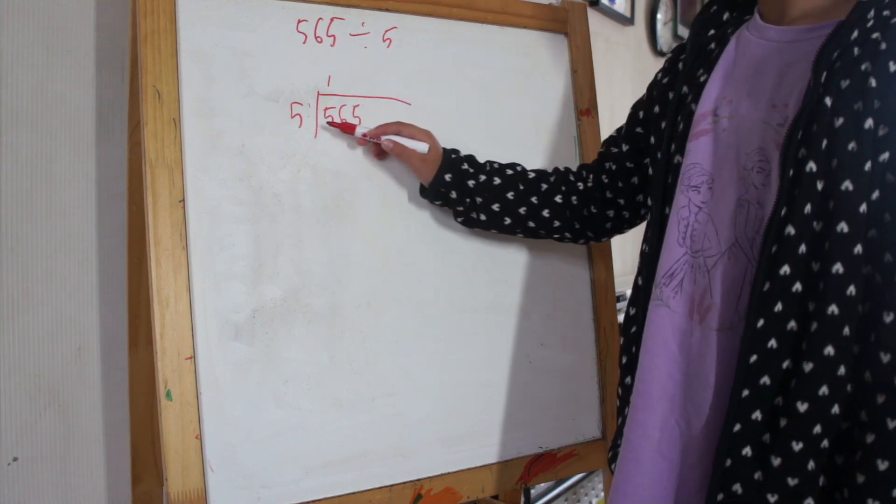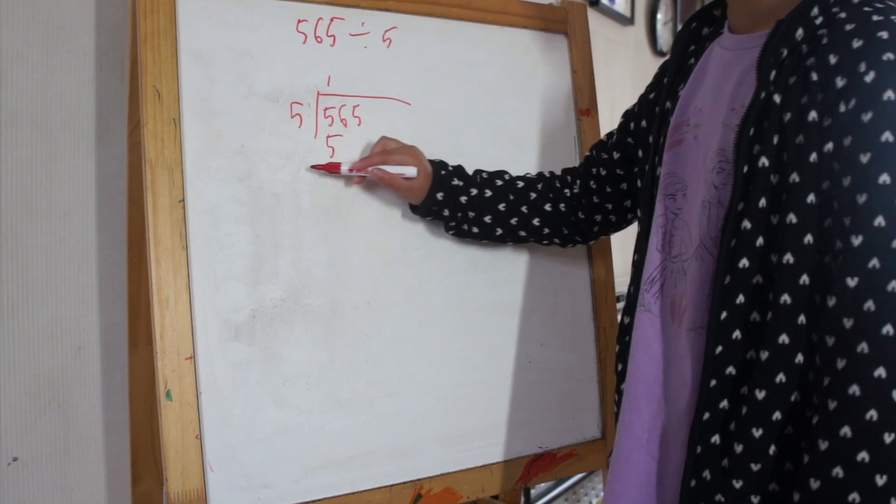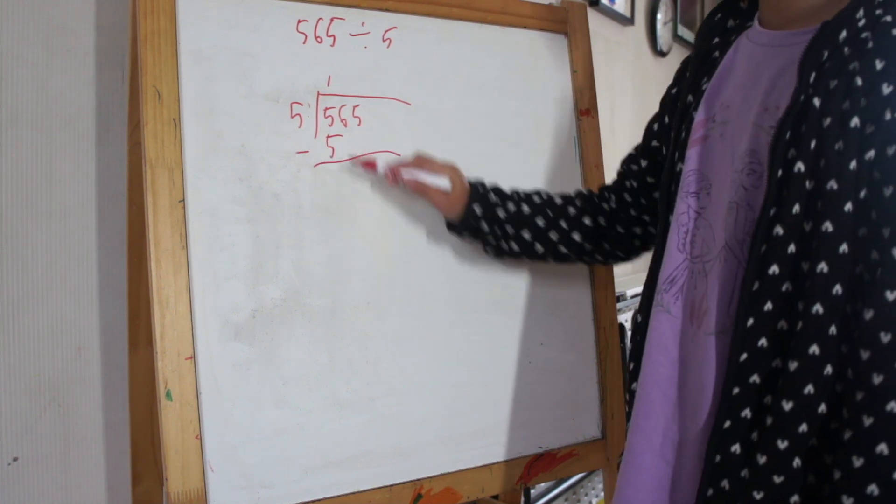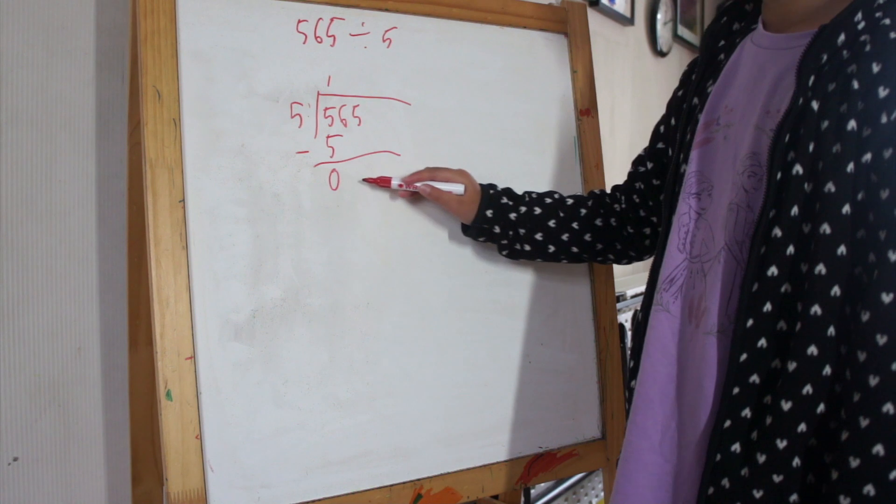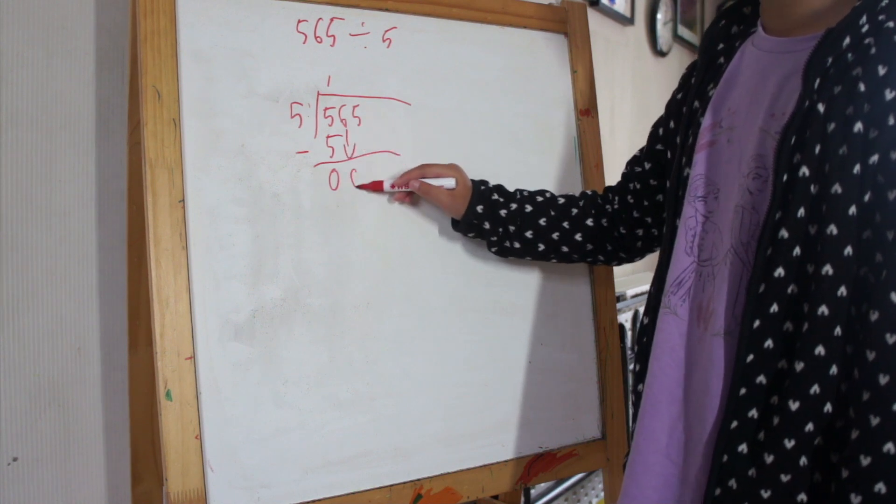So then, we write 5 here. We subtract: 5 minus 5 equals 0. Then we pull this 6 down here.